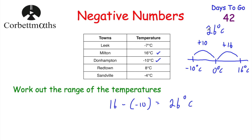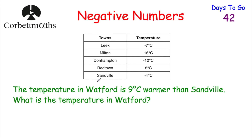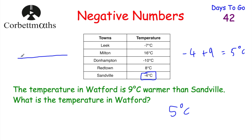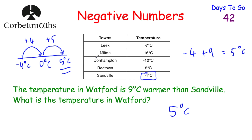The next part uses the same towns and temperatures. The temperature in Watford is 9 degrees Celsius warmer than in Sandville. What is the temperature in Watford? Sandville's temperature is negative 4 degrees Celsius, and Watford is 9 degrees warmer, so we do negative 4 plus 9. Adding 4 gets us to zero, and then we have 5 more to add, giving 5 degrees Celsius. You can also use a number line: start at negative 4, add 4 to reach zero, then add 5 more to reach 5 degrees Celsius.